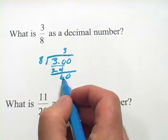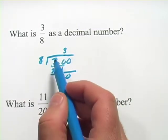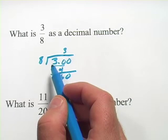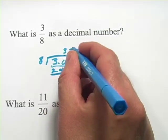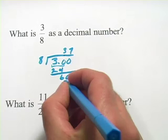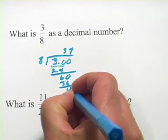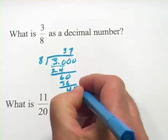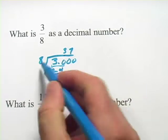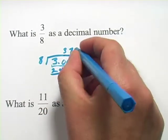Now how many 8's in 60? Well, let's see, 7 times 8 is 56. I think that's as close as we're going to get. So 7 times 8 is 56, now we've got a 4, I'm going to add another 0 and bring it down here. How many 8's in 40? That comes out evenly, 5 times 8 is 40.